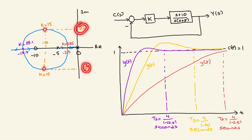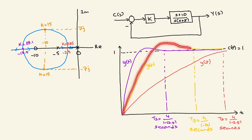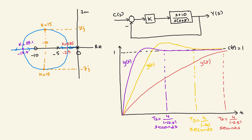When you select gain k equals 15, the poles have a real part at minus 10, so the system converges in about 4 divided by 10 seconds with some overshoot. If you select gain k equals 29.1, the real part of the poles exceeds minus 10, so the system converges faster, with only a slight overshoot and faster settling time.